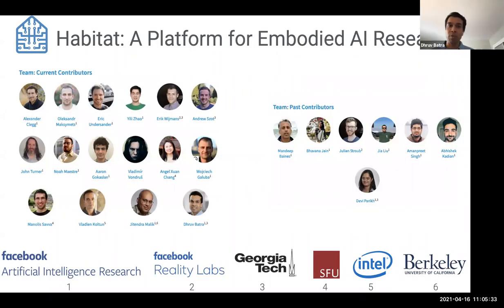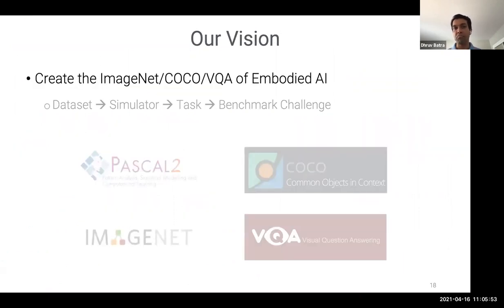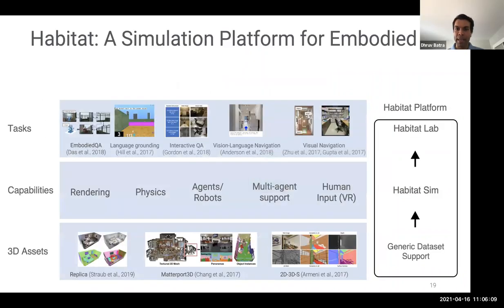And in that spirit, for the last three years or so, a multi-institution group of us at FAIR, at Georgia Tech, collaborators at Intel, Berkeley, Simon Fraser University, and others, have been working on a simulation platform called Habitat. Our goal is to create the ImageNet, the COCO, the VQA of embodied AI, meaning what is the right data set, what is the right simulator, what is the right task, what is a benchmark that we can rally around to study the problems that we want to study.